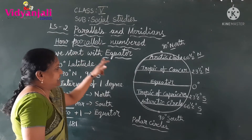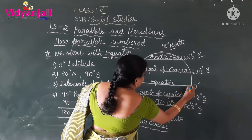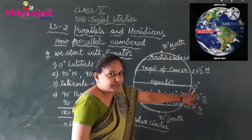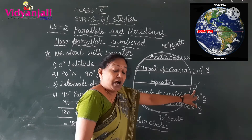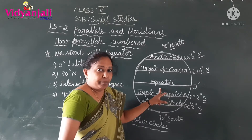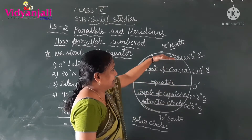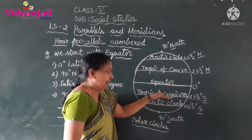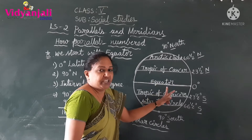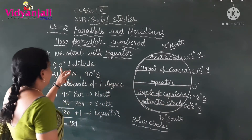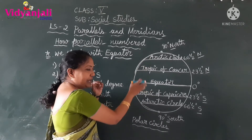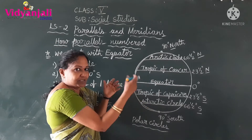We start with the equator. The equator is marked as 0 degrees. It is also the longest latitude. It divides the globe into two equal parts — the northern hemisphere and the southern hemisphere. Because it divides the globe into two equal parts, it is called the equator. Parallels are also known as latitudes.